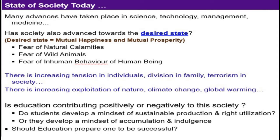Now we are going to see what is the state of society today. There are many advances that have taken place in society in terms of science, technology, management and medicine. Whether these advancements have given any desired state for the society — meaning mutual happiness and mutual prosperity. But in contrast, we have fear of natural calamities, fear of wild animals, and fear of inhuman behavior of human beings.